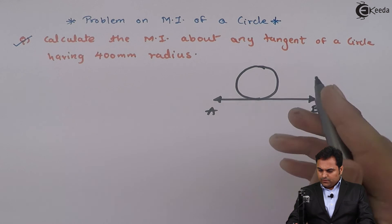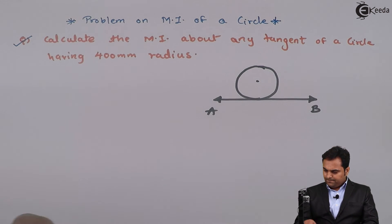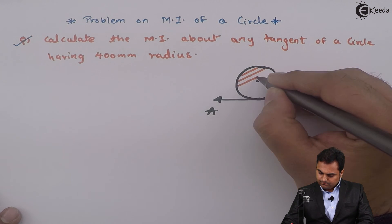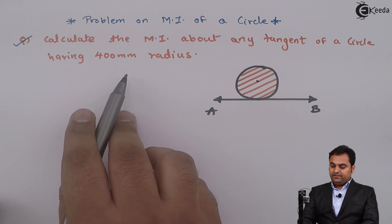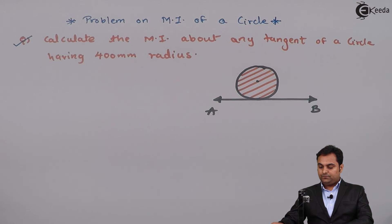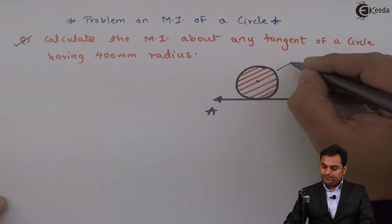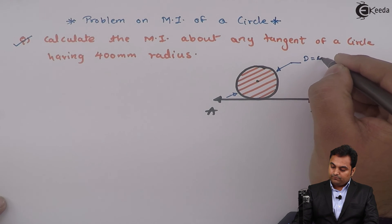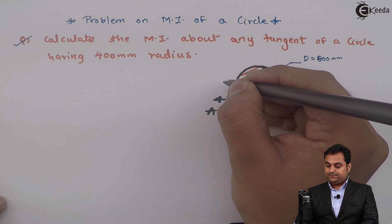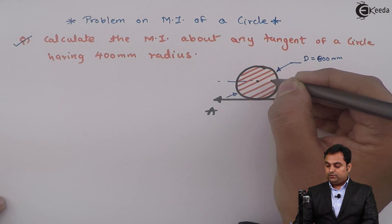So here we have a circle having radius 400 mm, so the diameter will be 800 mm.